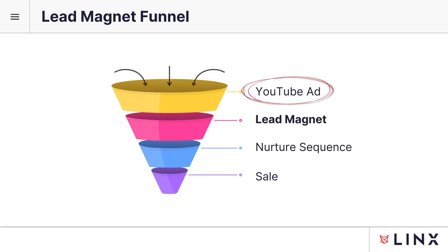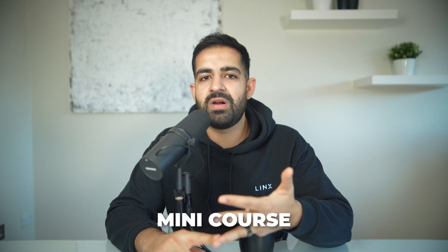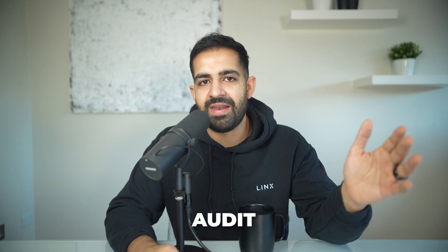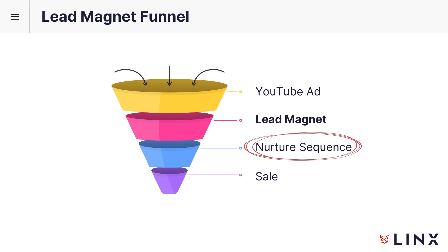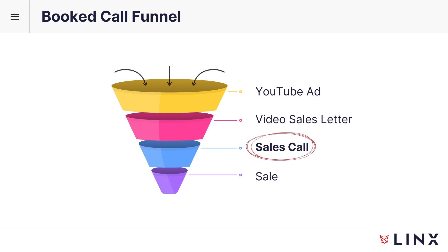Those two funnel types are lead magnet funnels and book call funnels. Lead magnet funnels start with a YouTube ad which takes people to a landing page where they submit their information in exchange for a lead magnet — this could be a checklist, a download, a mini course, an audit, anything of that nature. The lead is then placed into a nurture sequence where they eventually turn into a paying customer. A book call funnel starts with a YouTube ad that takes people to a video sales letter or a page where the lead can book a call directly with a sales rep, who then turns that lead into a customer.